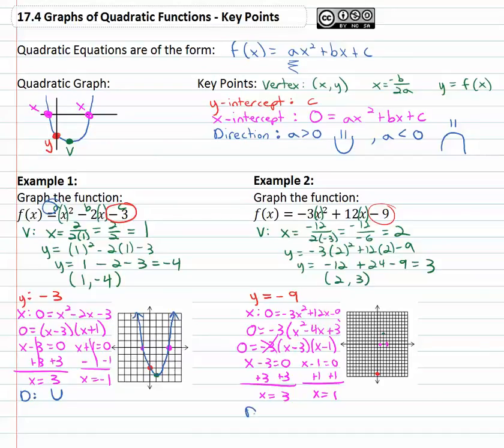And then finally we know the direction of this graph because the a is negative, it's going to be a sad graph. It's going to be going down and sure enough we see that shape looking at our parabola connecting the dots.